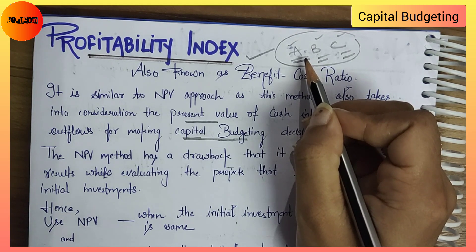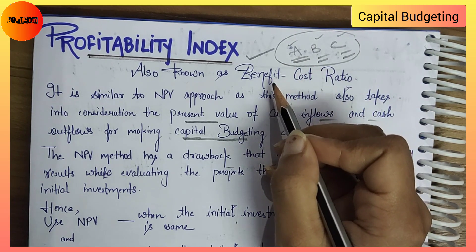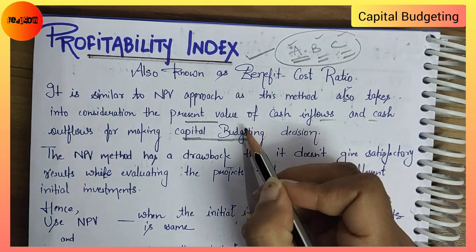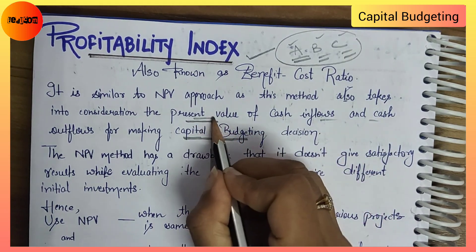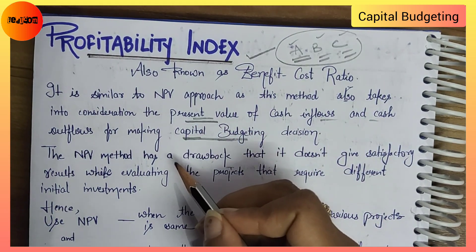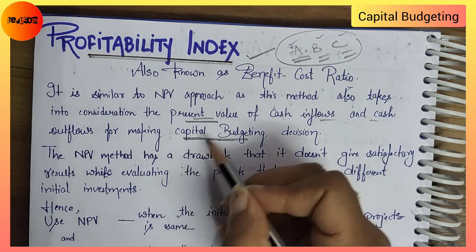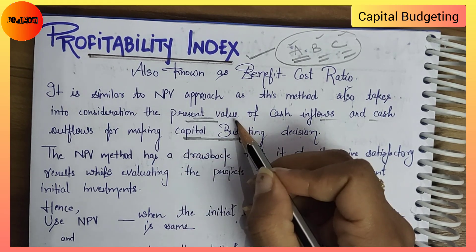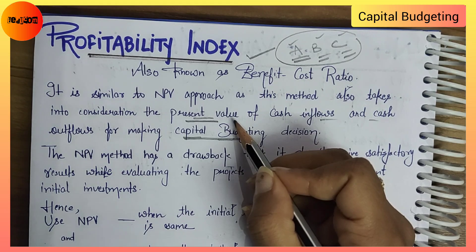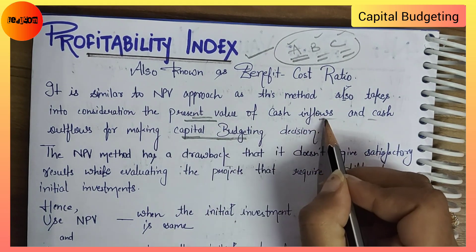The profitability index method is a discounted cash flow method of capital budgeting decision. Now, what is present value? Present value is the current value of a future amount — the value today of money you will receive in the future.